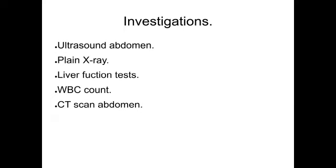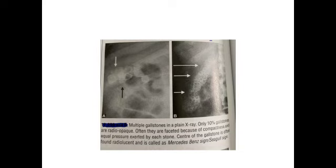Investigations include ultrasound abdomen, plain X-ray, liver function test, WBC count, and CT scan abdomen. The plain X-ray of the abdomen shows multiple radiopaque gallbladder stones. In one of the stones there is gas inside — the centre of the gallstone is radiolucent — and this is called the Mercedes-Benz sign or Seagull sign. If the stone shows a tri-radiate lucency, it is called the Mercedes-Benz sign; if biradiate, it is the Seagull sign.